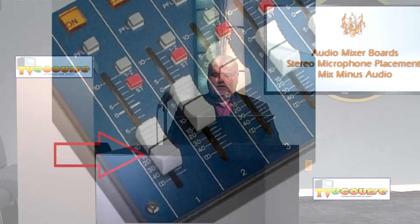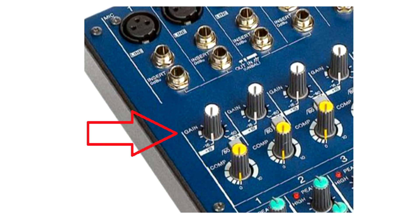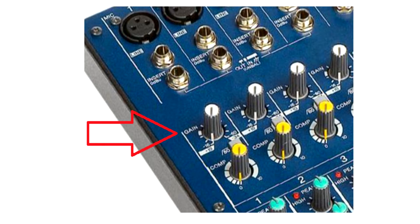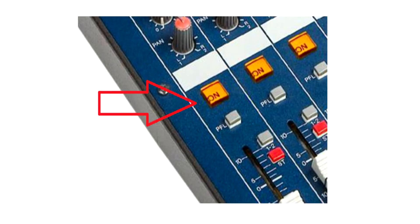Looking at one channel: it has a slider pot that slides up and down. When pushed all the way down, the audio is cut off; as you slide it up, the audio gets louder. At the very top of the mic channel is a trim pot, which you use to adjust the overall gain for that channel. Going from the bottom to the top of an individual mic channel, you have the slider pot, then above that a mute button, which turns that channel on or off.